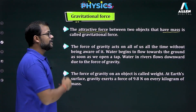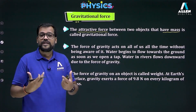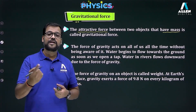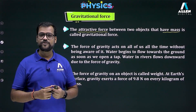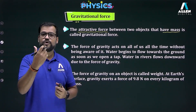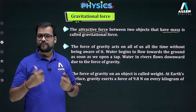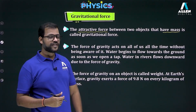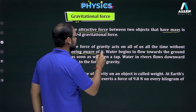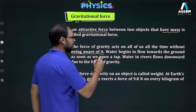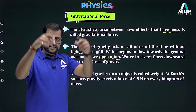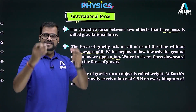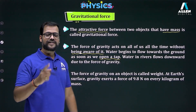Gravity is acting on us all the time without us being aware of it. It is the weakest force in nature but also the longest-range force. It is the weakest because we can still do things against it — we can climb, walk, and run. Examples of gravity always acting: when we open a tap the water flows toward the ground, rainfall is downward, and river water and waterfalls all move towards the earth's surface.